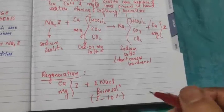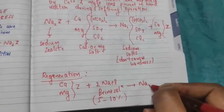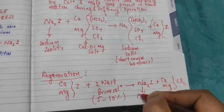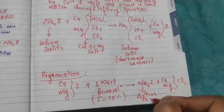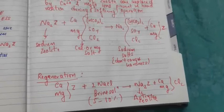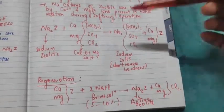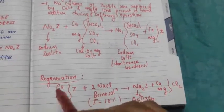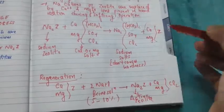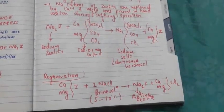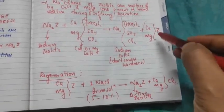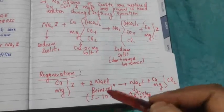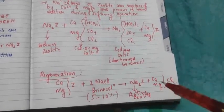On treating with 5–10% brine solution, the calcium and magnesium zeolites are converted back to Na₂Z — the active zeolite — so that the softening process can resume. This is the regeneration process.